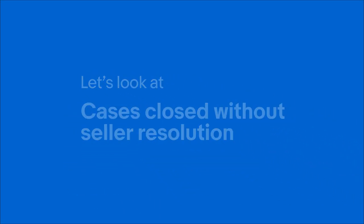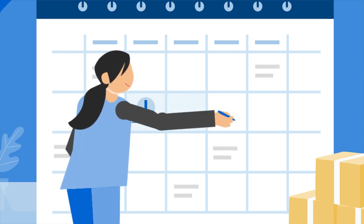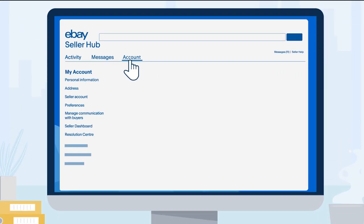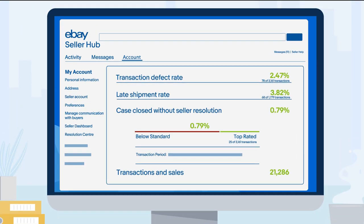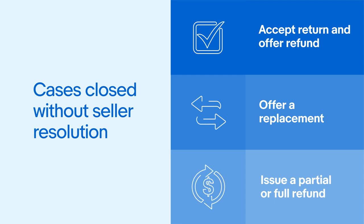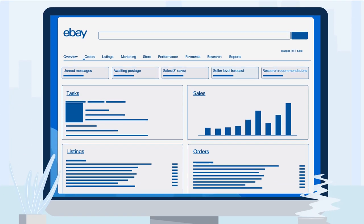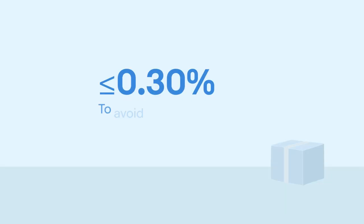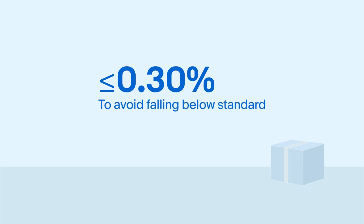First, let's look at cases closed without seller resolution. When a buyer reports that an item hasn't arrived or requests a return, you are responsible for resolving it within three business days. A case closed without seller resolution occurs when you don't resolve the buyer's issue within that three-day period. In most cases we require you to offer a return for refund, a partial refund, or full refund. If three days pass without any resolution, eBay will step in to resolve on your behalf. To avoid falling below standard, you need to have 0.3 percent or fewer of your transactions resulting in cases closed without seller resolution.